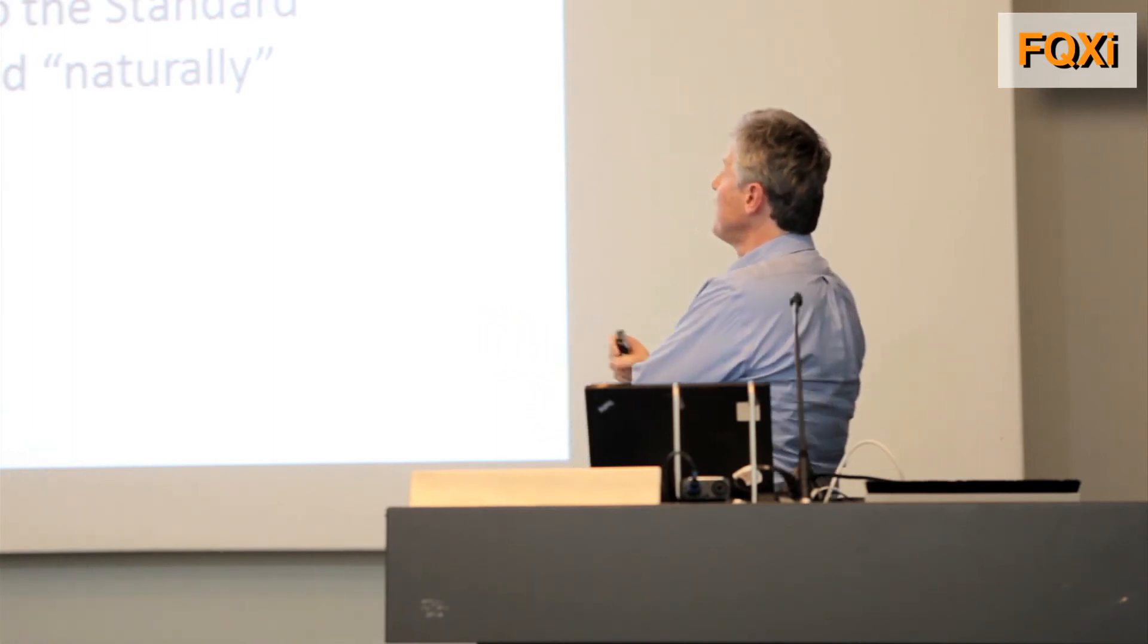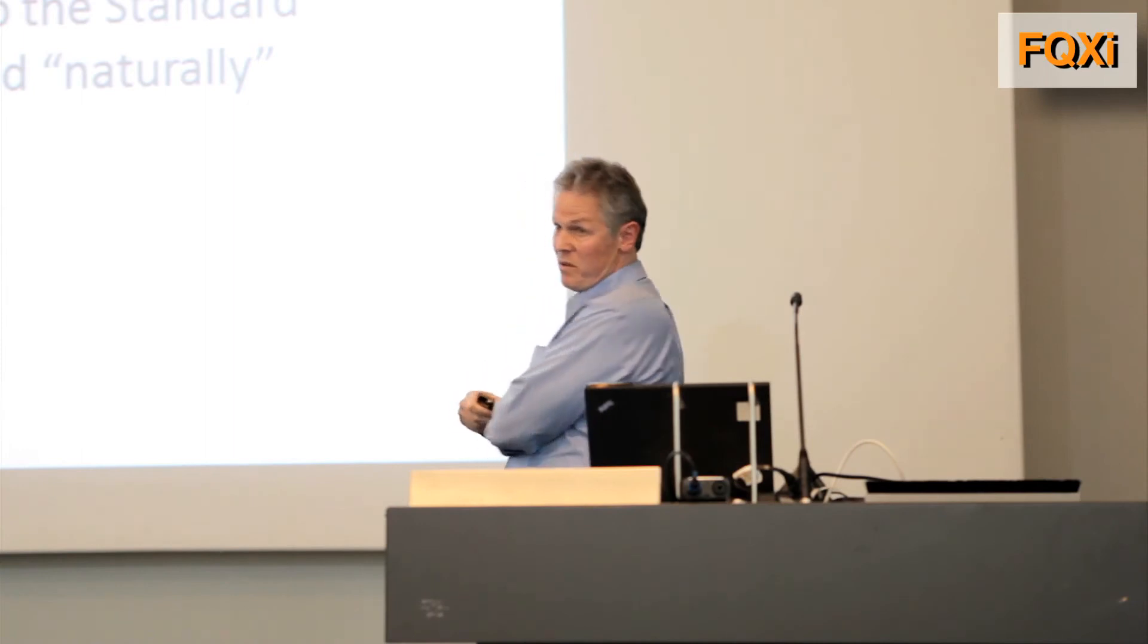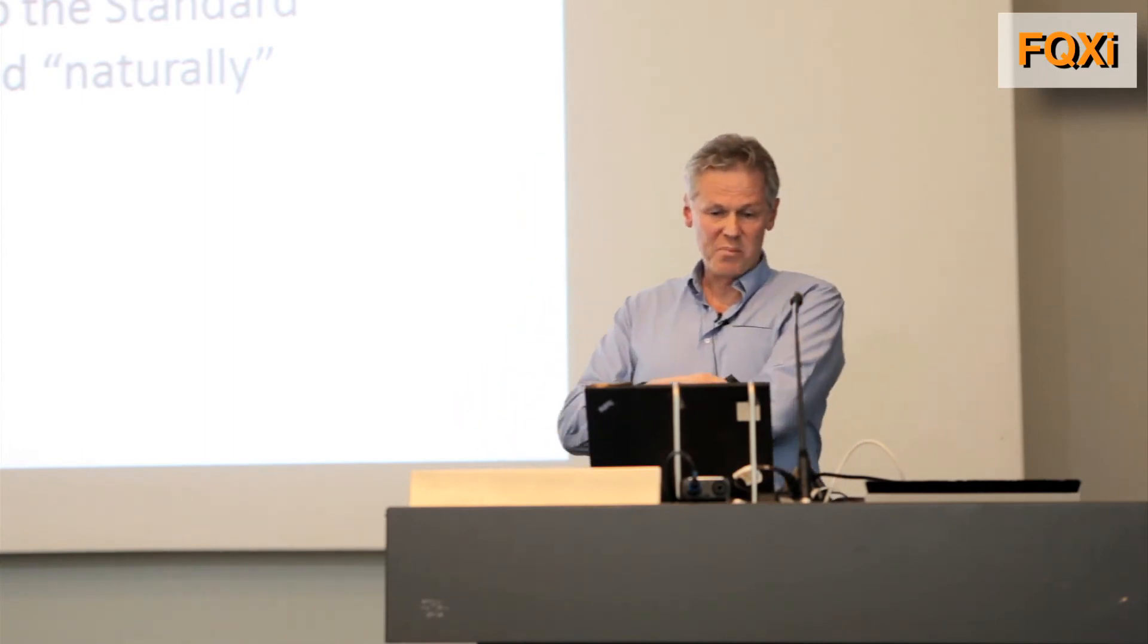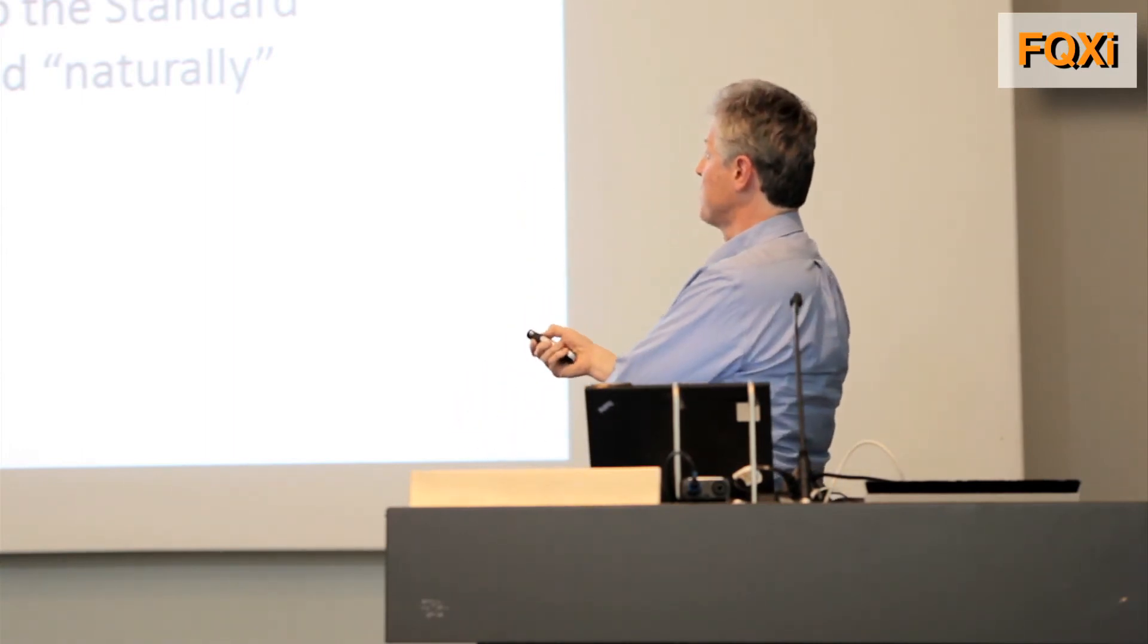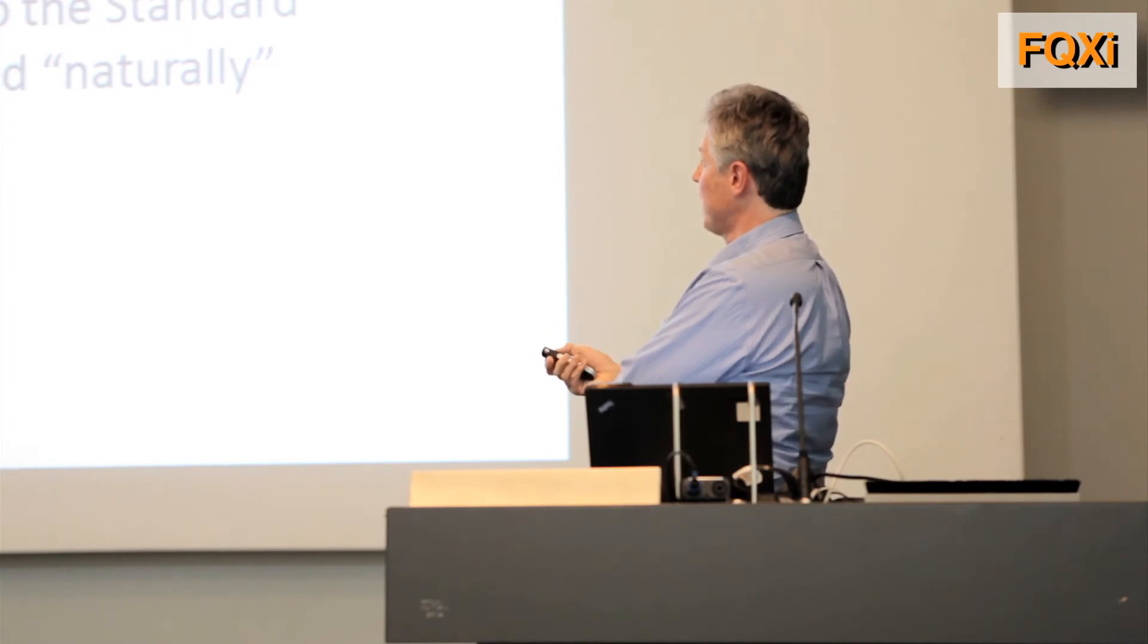It's capable of diluting out unwanted components of the universe, like curvature and magnetic monopoles, and that was considered a major coup to be able to do that. It also, when you get into the technical details, seems to offer an explanation for the approximate homogeneity and to actually quantify the deviations from homogeneity that we observe in the universe. So that seemed to be a very nice feature to have.